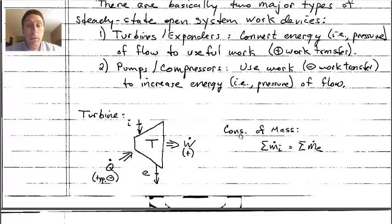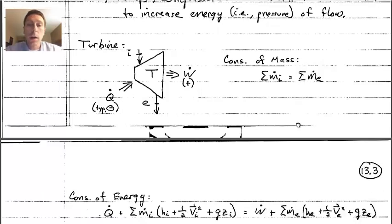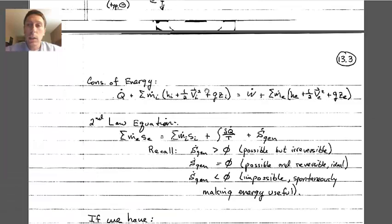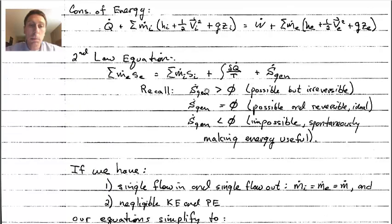Our conservation of mass equation says the sum of mass flow in equals the sum of mass flow out. The conservation of energy equation says Q-dot plus the sum of energy flowing in with the inlet mass flow rate equals the work transfer plus the energy flowing out with the exit mass flow rate. The second law equation says the sum of entropy leaving the control system with mass flow rate equals the inlet entropy plus entropy added by heat transfer plus any entropy generated within the system.